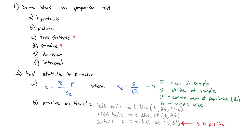For example, if t was negative 1.3, we would type in positive 1.3 for the two-tailed test. On the left tail and right tail tests it's okay to have a negative value, but for the two-tailed test Excel requires a positive. Now let's do an example where we find the test statistic and p-value — in the next video we'll do a full hypothesis test.